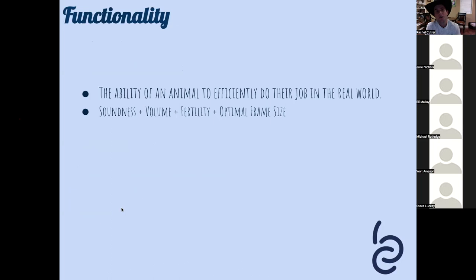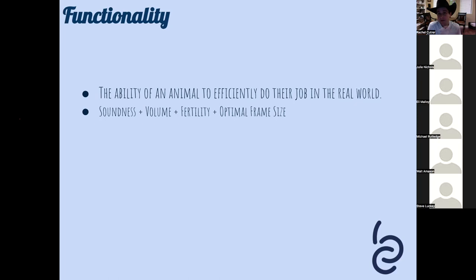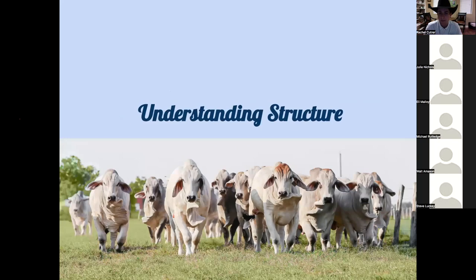Functionality means that animal's ability to do their job. Can a bull effectively cover country, breed open cows, stay in flesh, and do it again next year? Can a cow stay on a 365-day calving window, wean off a calf at half her body weight, and repeat? Functional cattle are sound, high volume, fertile, and have the frame size to fit their environment. Keep those four rules of thumb near and dear.